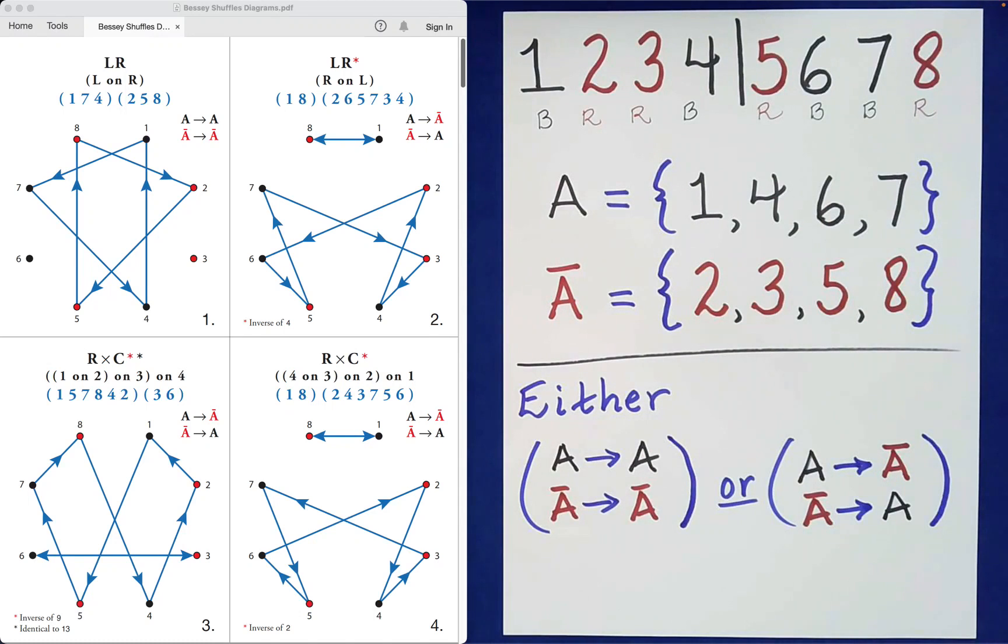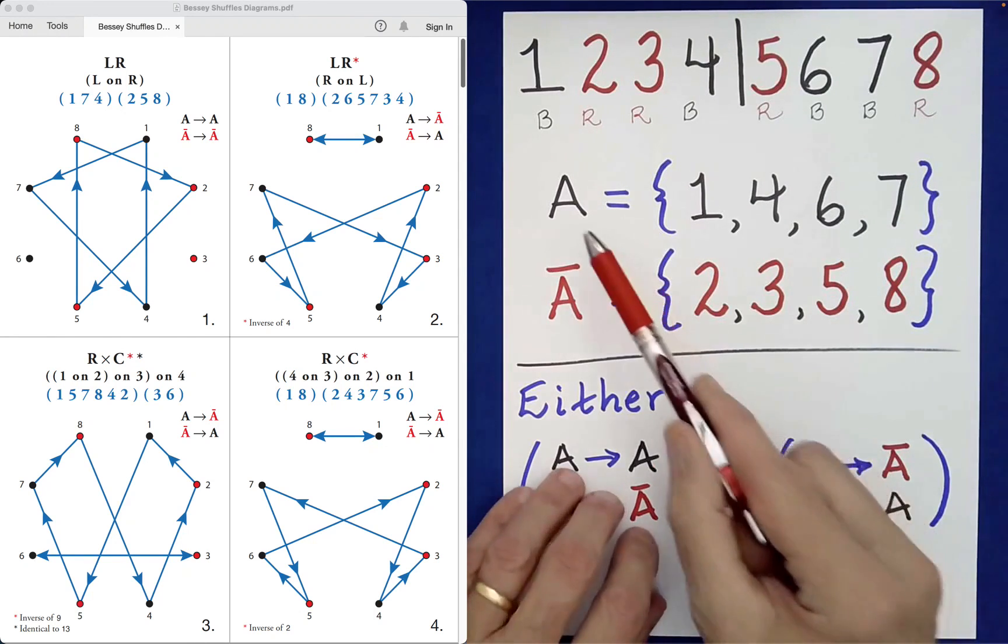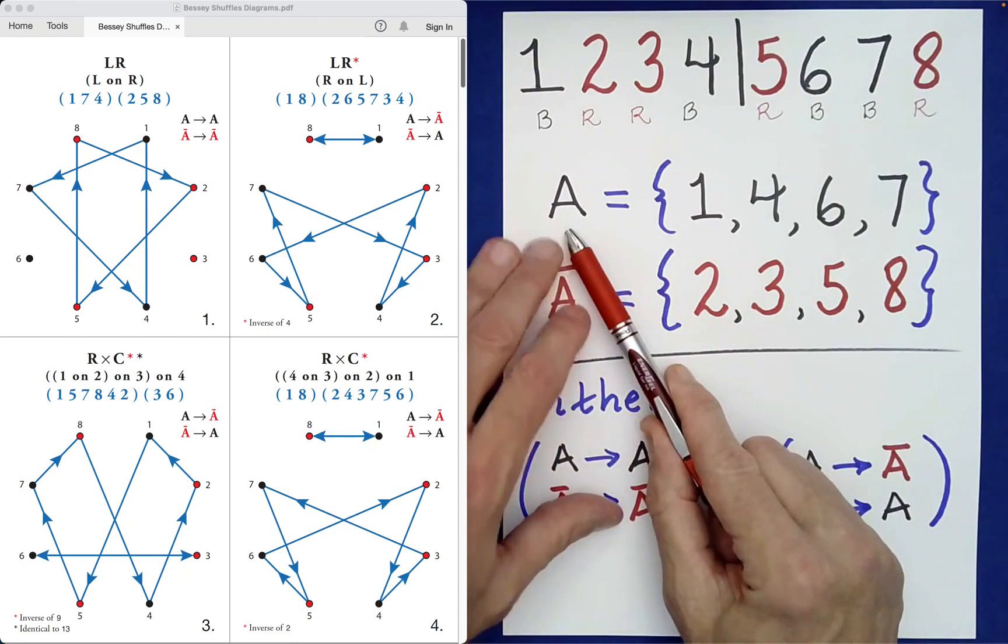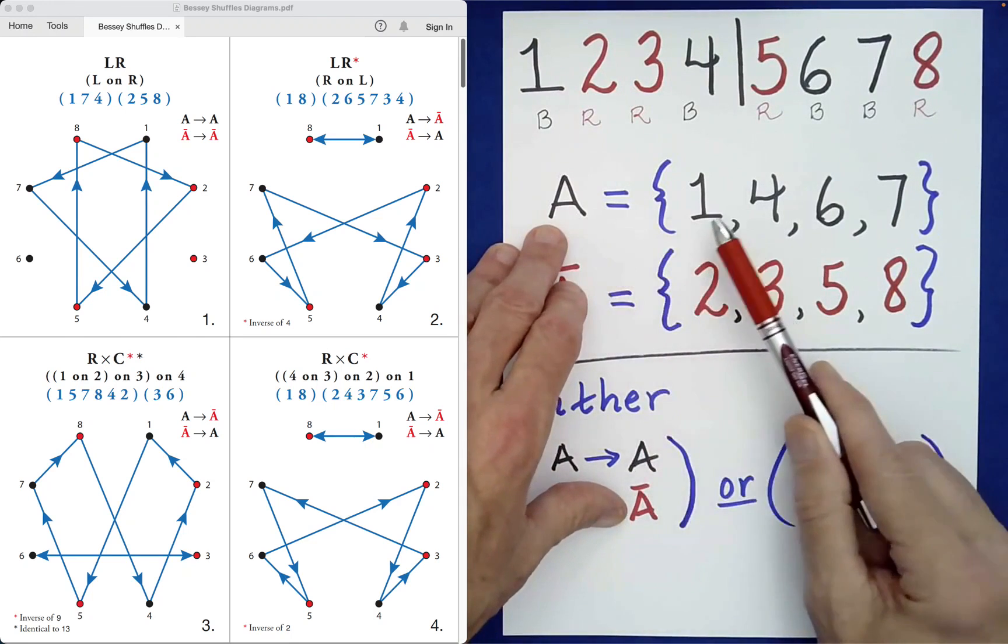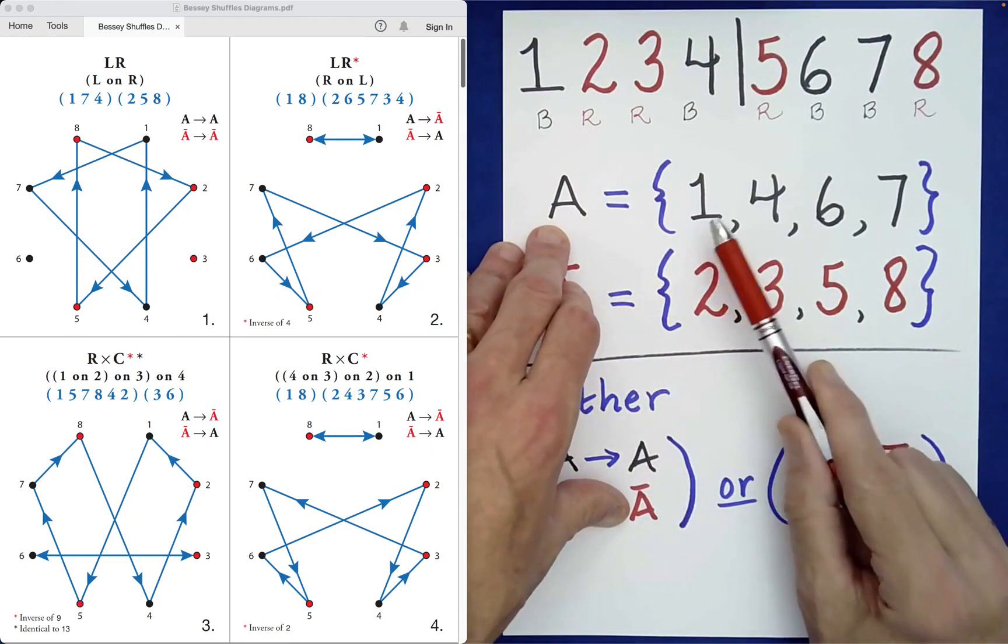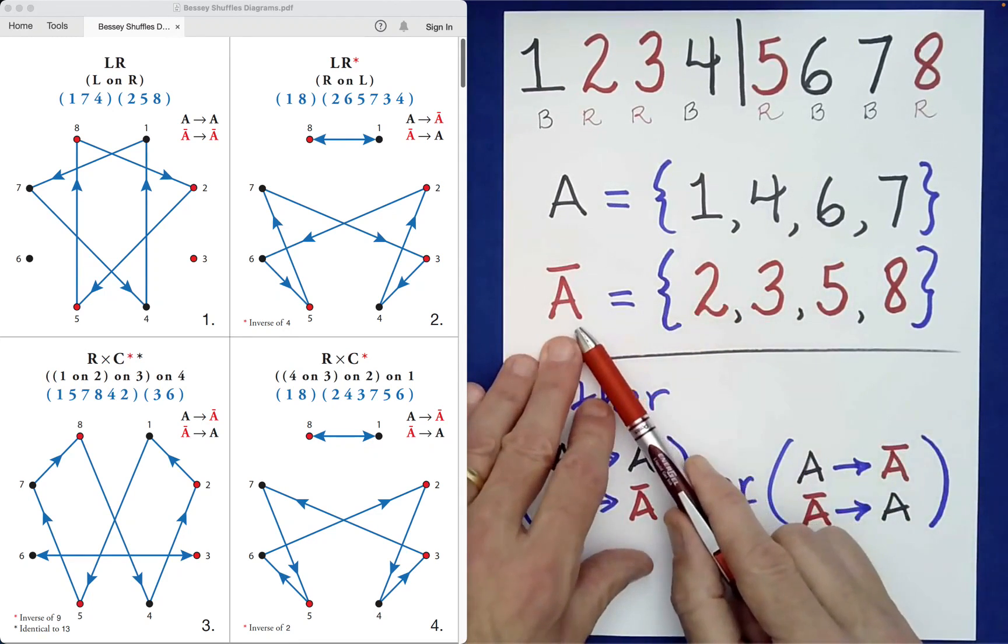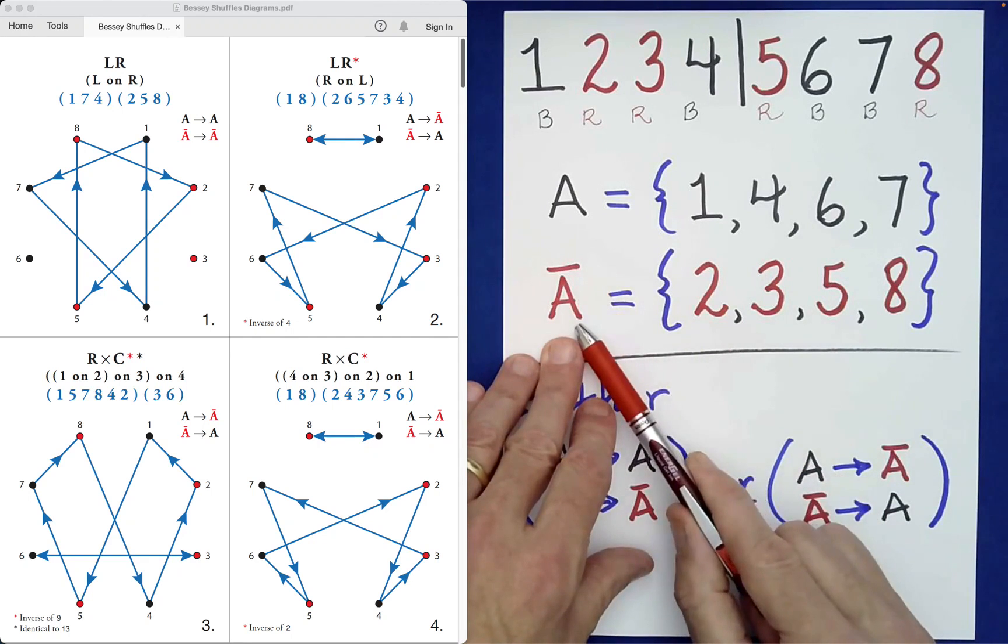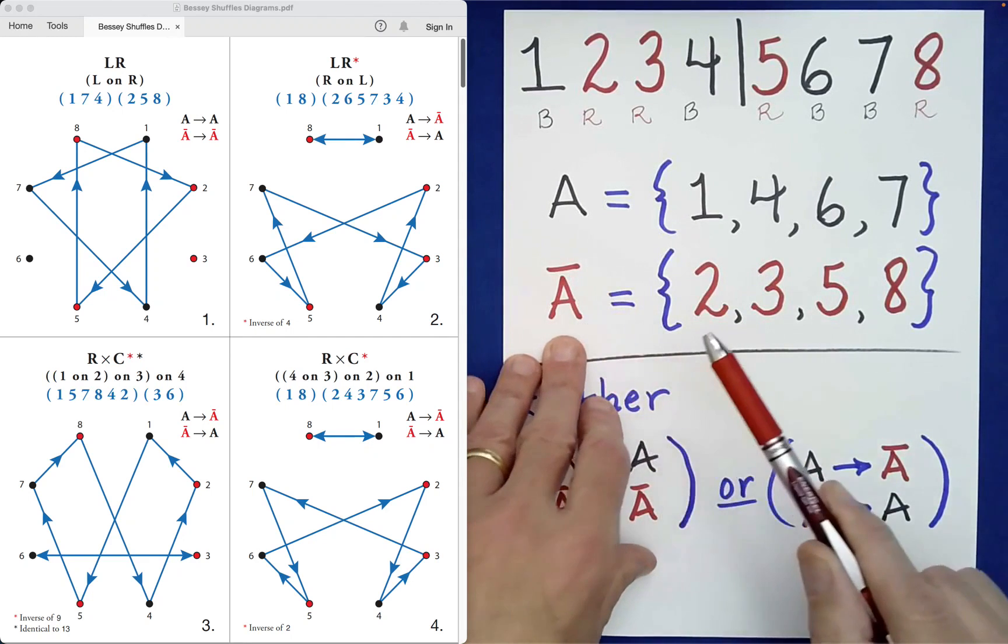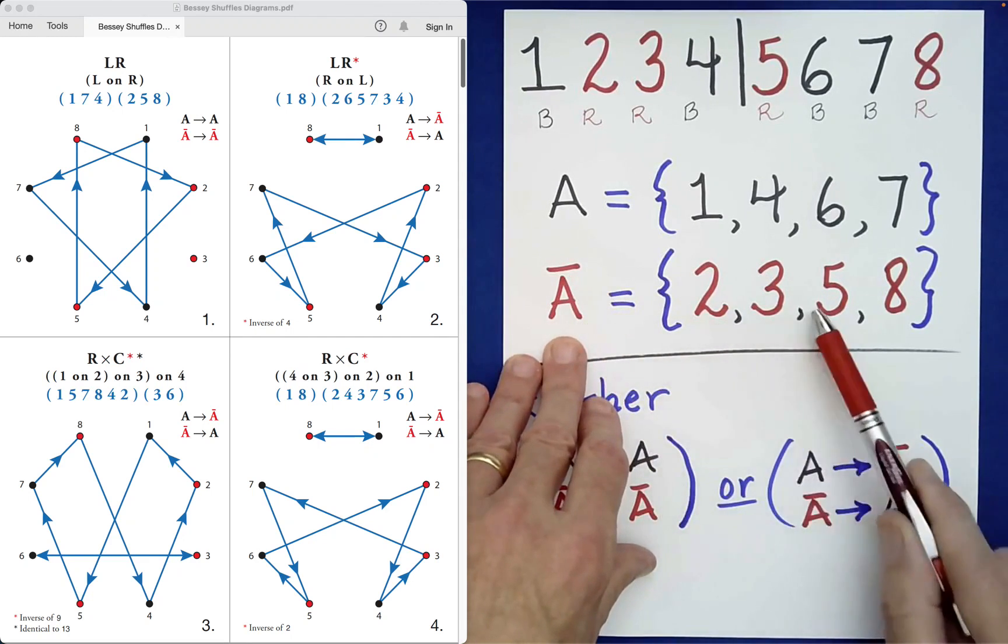And here I've identified a set A as consisting of the positions 1, 4, 6, 7, and its complement—that's what the bar means—the complement of A consisting of the positions 2, 3, 5, 8.